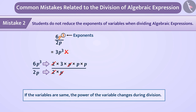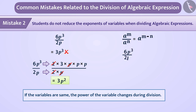This gives the result 3p squared. The same can be solved using exponent rules: since a^m divided by a^n equals a^(m−n), 6p cubed divided by 2p can be simplified accordingly, giving the correct result of 3p squared.